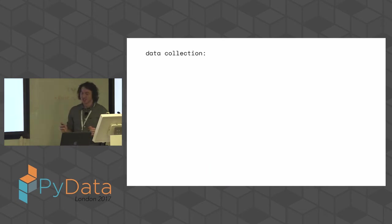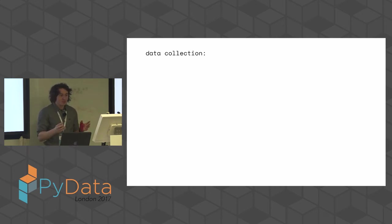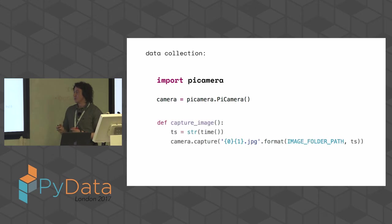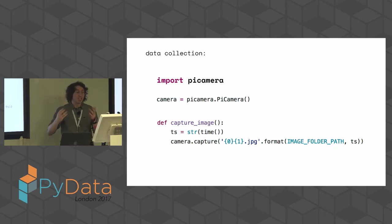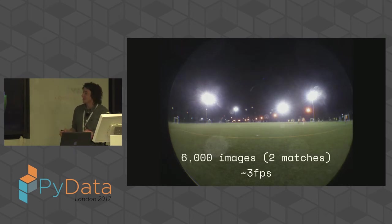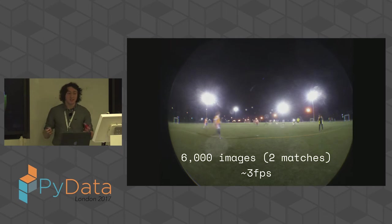Now that I've got the robot, I can collect the data. What's great about Raspberry Pi is there are libraries for communicating with most hardware you're interested in. For the Pi Camera, there's literally a library called Pi Camera. I wrote a simple function that takes the current time as a string of milliseconds, captures the image, and saves it with the timestamp as the filename. I end up with a big folder of all the images named by the time they were captured. I collected about 6,000 images over the course of two matches at a rate of about 3 FPS. All that worked.